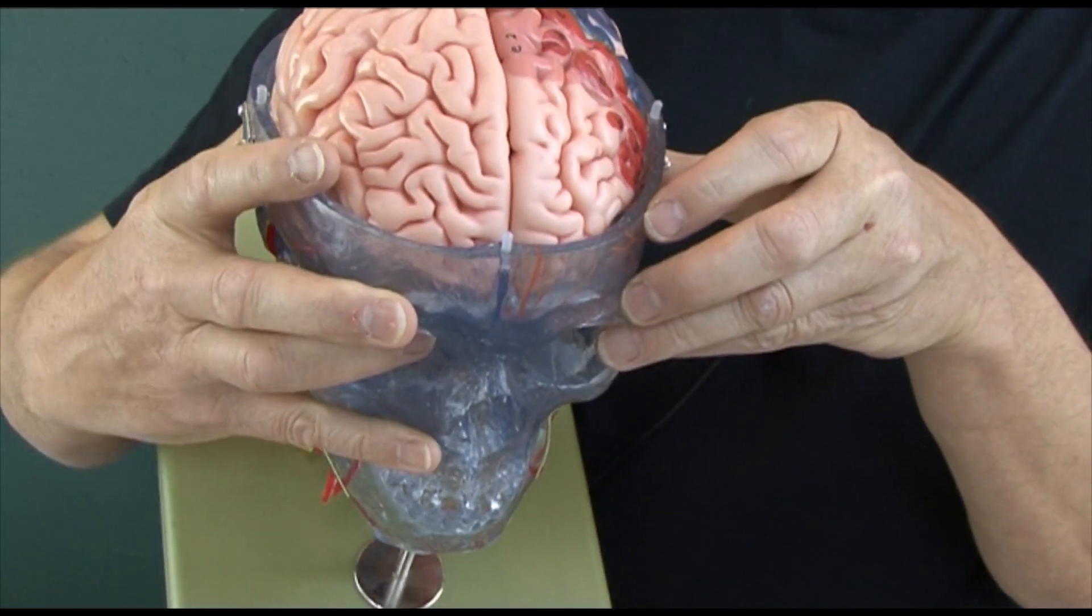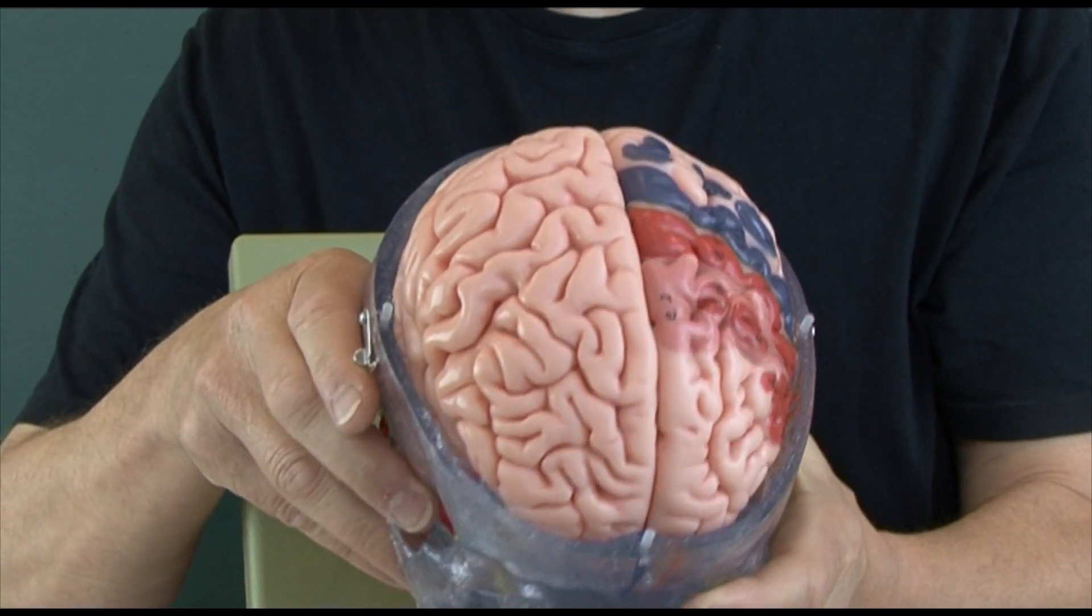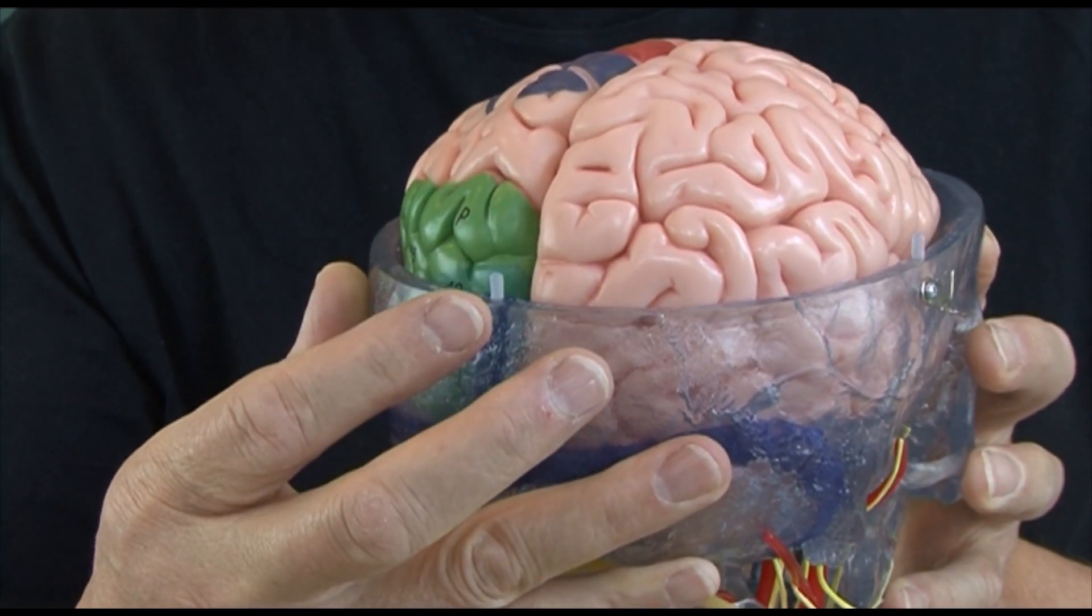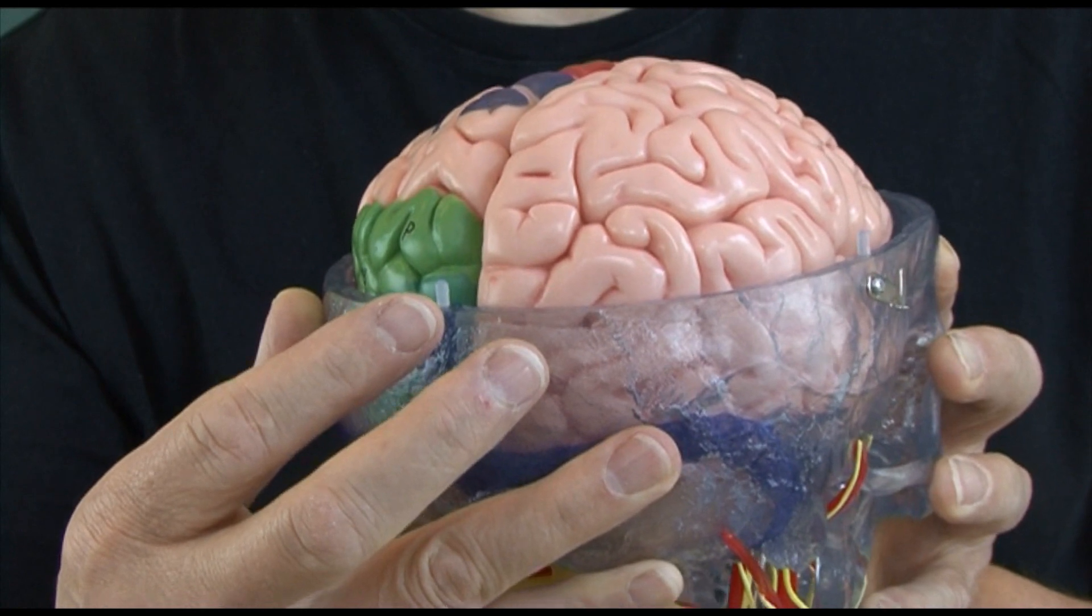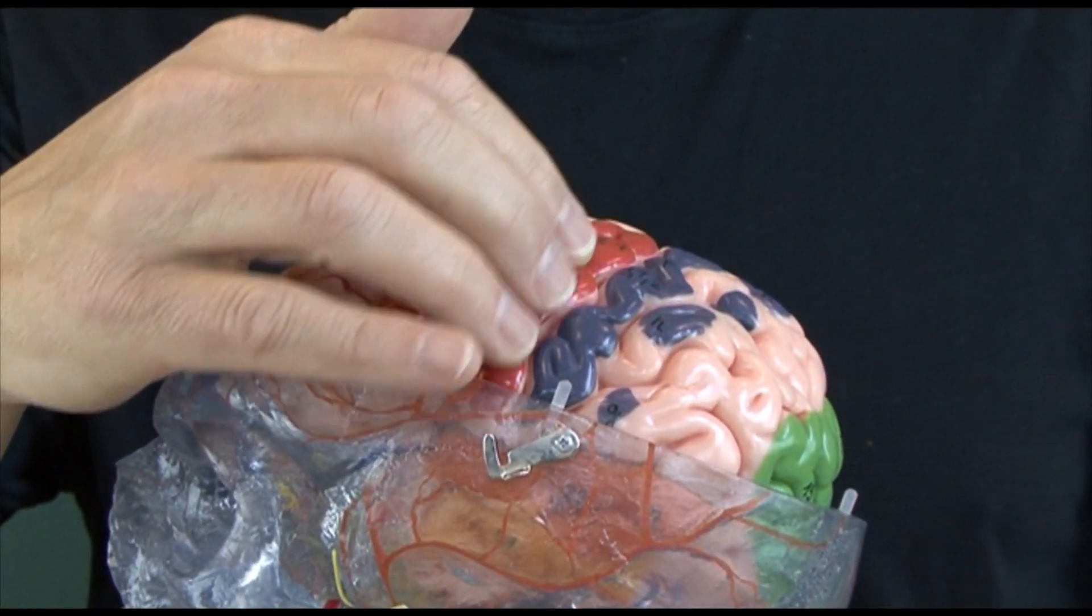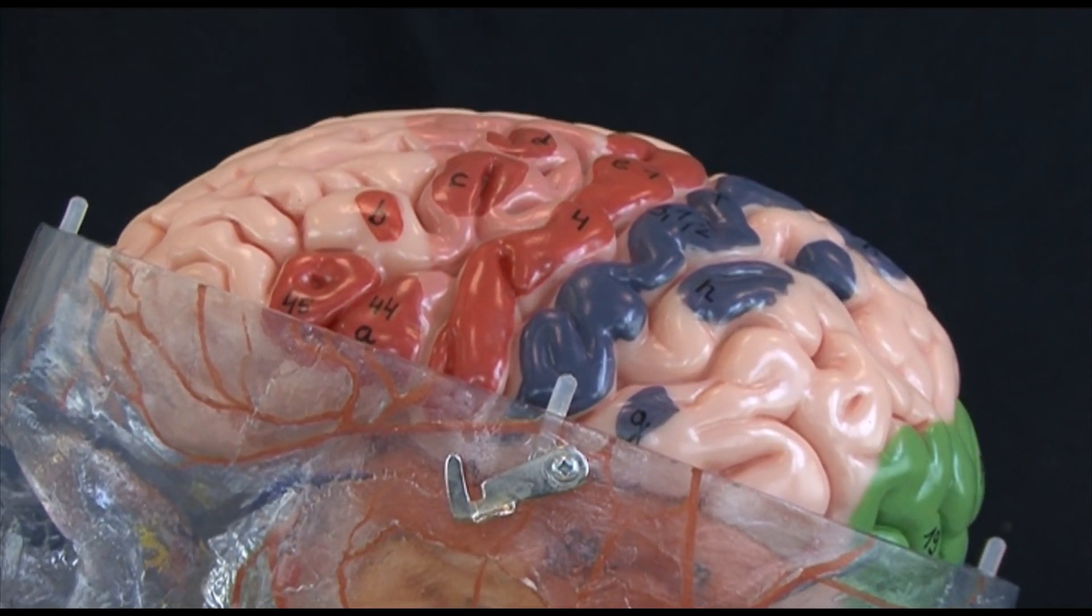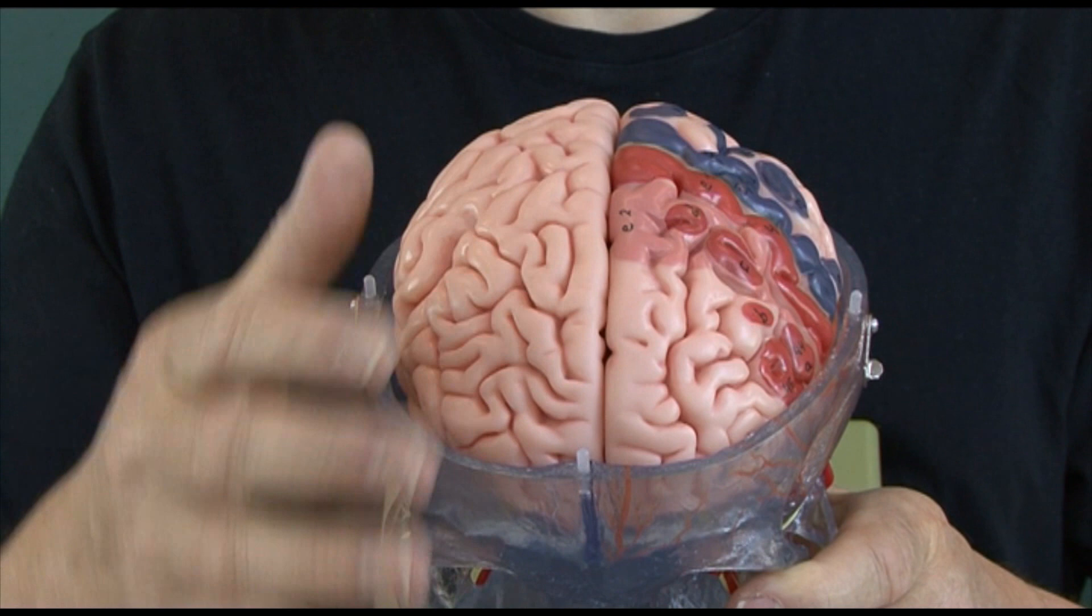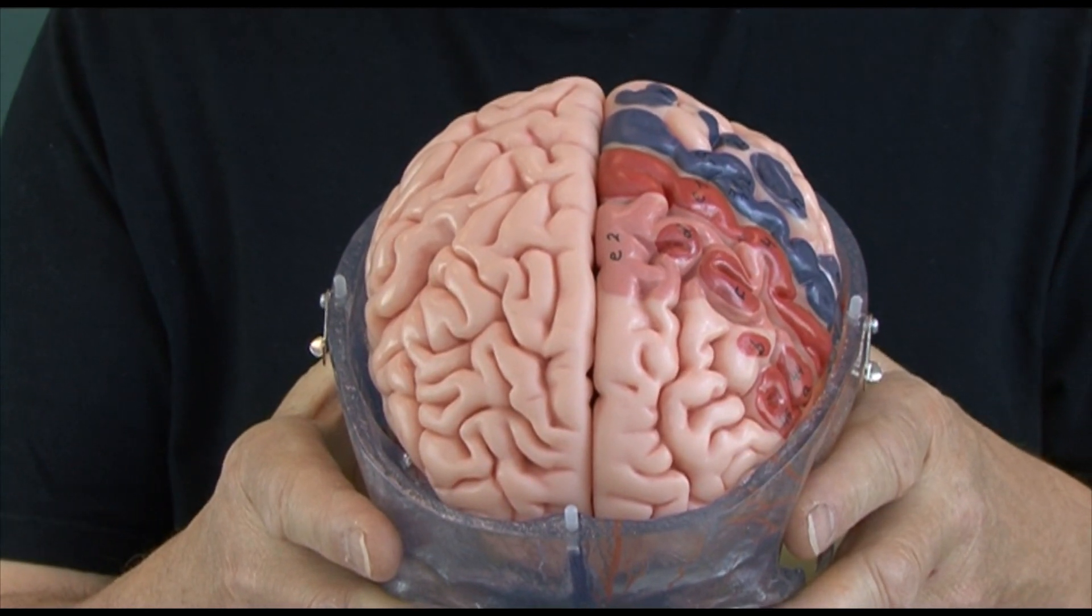We can see the frontal areas, parietal areas, and at the back we have the occipital areas - on this side it's in green, the occipital area. In this model in red we have the motor areas, and in blue we have the sensory areas. Again we can clearly see the right cerebral hemisphere and the left cerebral hemisphere.